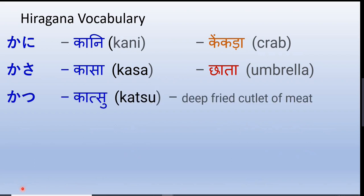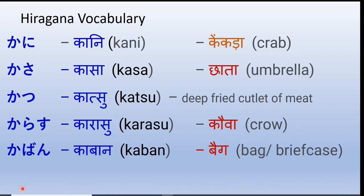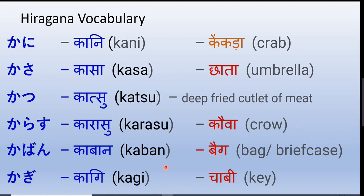Katsu is a deep-fried cutlet of meat. Notice the pronunciation — it's not 'katsu' with a flat 'su,' it's katsu. Karasu — the crow. Kaban — bag or briefcase. The N in kaban is the independent N sound in Japanese, the only sound that doesn't come with a vowel. It is used to write words like kaban, Nippon, Nihon, and so on.